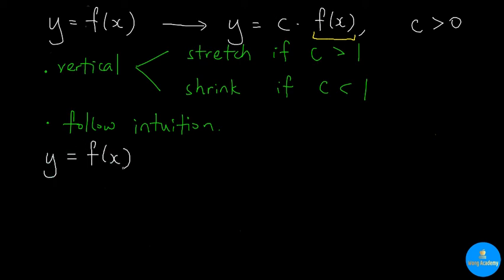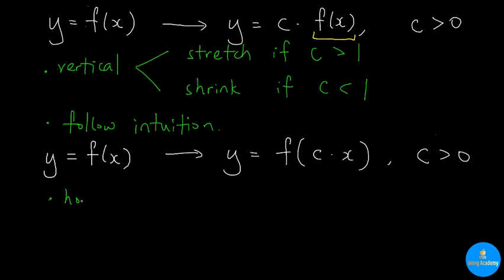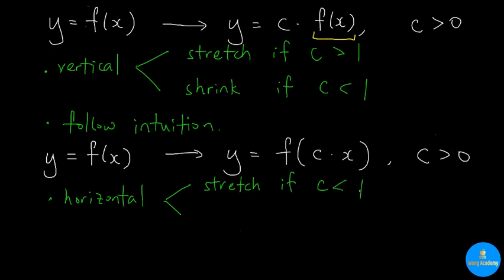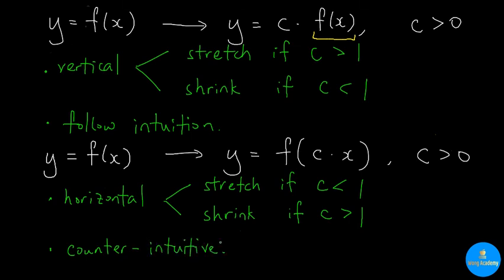If we want to produce horizontal action, we transform the equation into y equals f(c · x), where c is positive. This will be either a horizontal stretch or a horizontal shrink. It is a horizontal stretch if c is less than 1, and a horizontal shrink if c is greater than 1. We say that horizontal action is counter-intuitive, because when we replace x by c times x, we are either stretching or shrinking the x-axis, and correspondingly shrinking or stretching the graph.